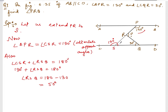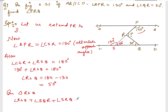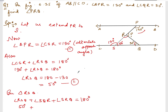Now in triangle RSQ, the sum of all angles must be 180°. We know angle RSQ is 50° and angle SQR is 30°. So: angle RSQ (50°) plus angle SQR (30°) plus angle SRQ equals 180°.